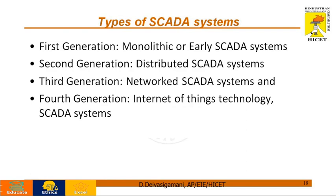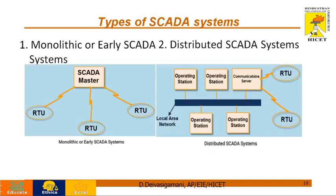These are the different types of SCADA systems available. There are four generations. The first generation is the monolithic or early SCADA system — it is completely limited, an early intervention model. It operates as a single directional control where many computers are used but only a single control exists in the system. It is one of the oldest versions.